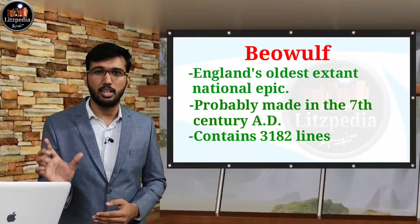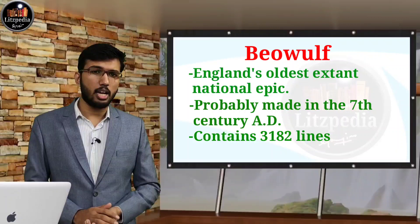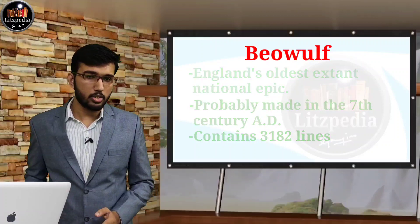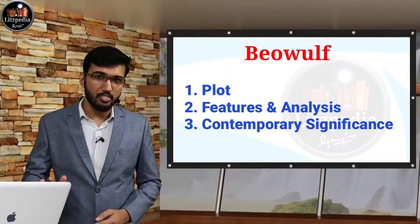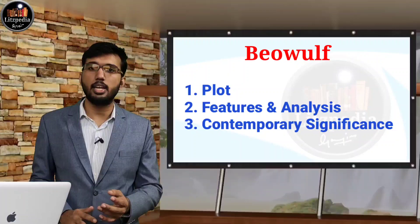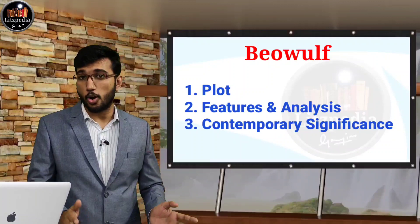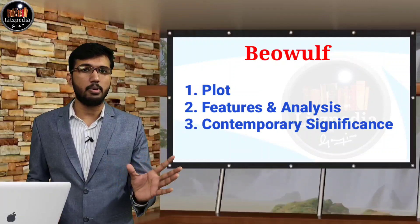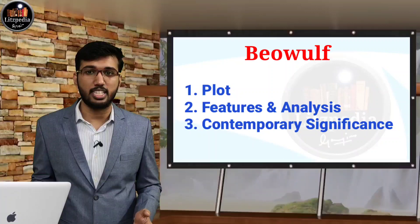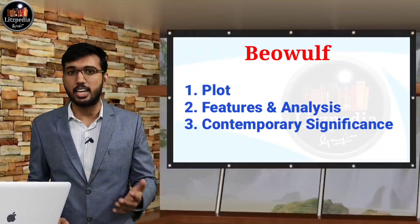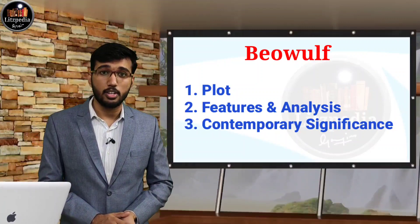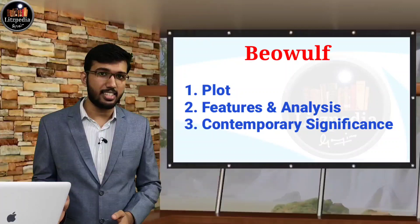I have given a mention of Beowulf in the previous video lecture. And I am actually dividing this Beowulf analysis into three sections. First we will discuss the plot of Beowulf, then we will come to the features and analysis, and then we will discuss the contemporary significance. We need to understand that while approaching a literary work — even if it is for a university examination or a competitive examination — rather than just understanding the summary or the plot line, we need to know the literary elements used, the allegorical elements, so indirect references. All these things we need to understand. So here I am dividing into three sections: plot, features and analysis, and contemporary significance.